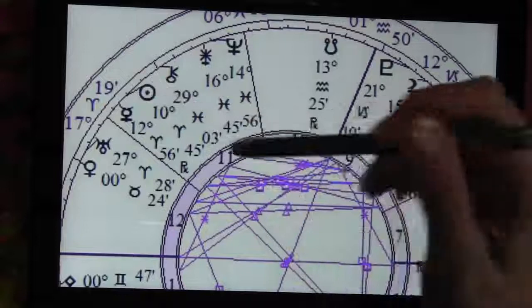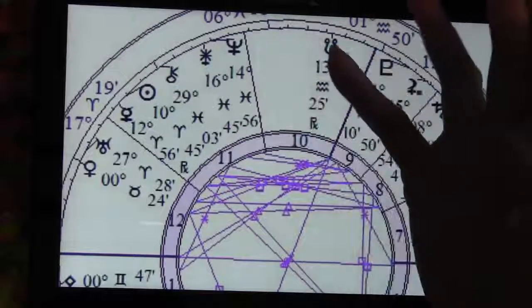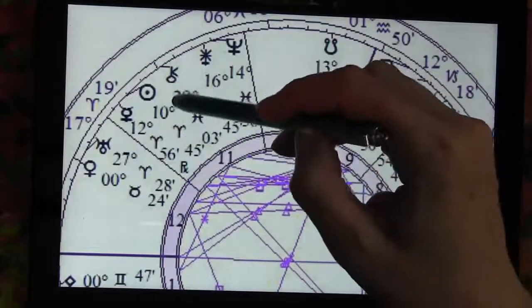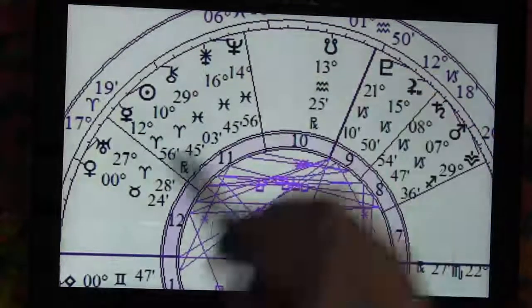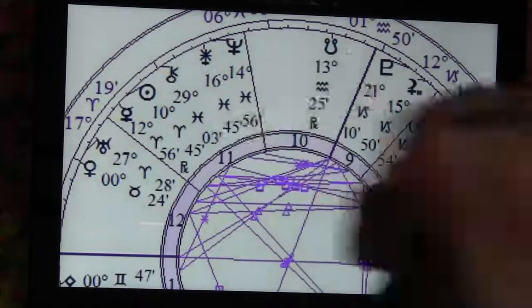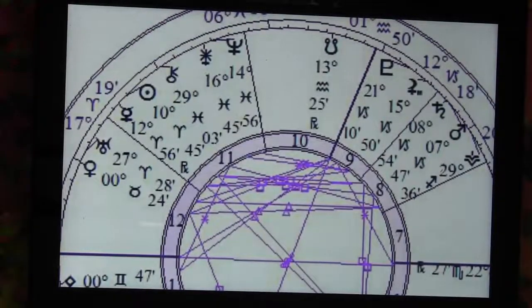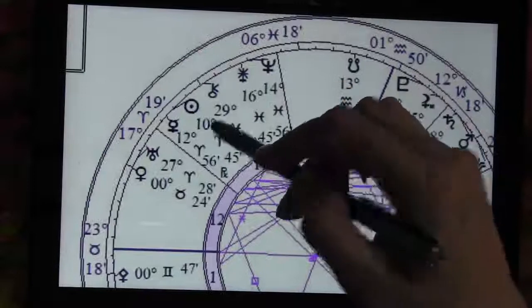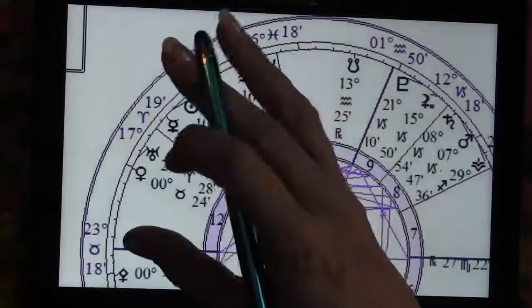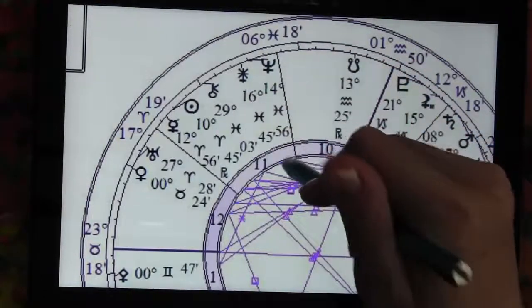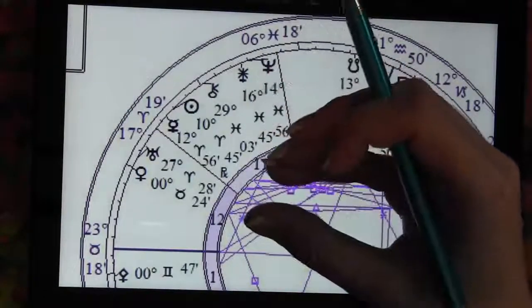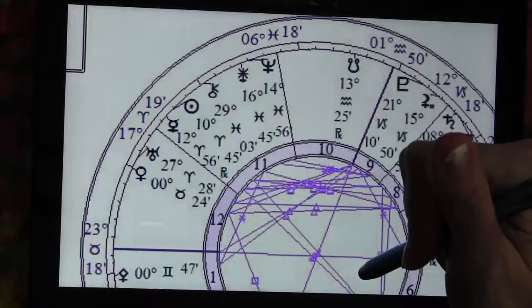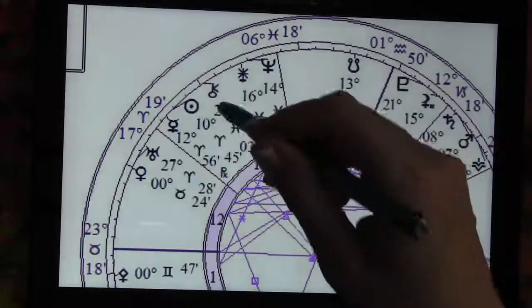Vesta is trine Uranus but squaring Chiron. Vesta, we want to make everything clean and new again. We want to feed everybody. We want everybody to be nurtured and taken care of. I got off when we were talking about the zeros, because zeros are critical degrees too. 29 is the critical degree, but zeros are too. It's like a reset point. We're reaching a reset point with this Chiron.